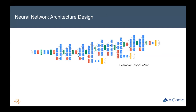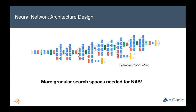What really differentiates neural network architecture design is the granularity of the search spaces being considered. If we take a look at the GoogLeNet architecture, there are a lot more architectural decisions that need to be made, like the operations we want to use and how to chain together these operations to form a larger network. More granular search spaces are needed for NAS, and these are the types of search spaces we're going to be looking at today.